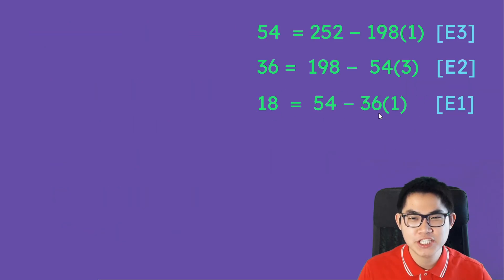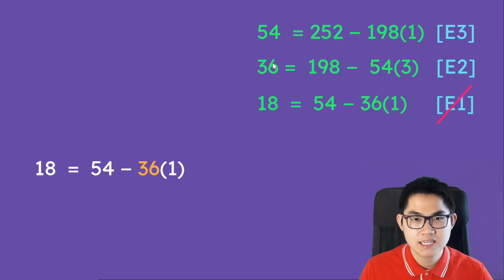Let's take this equation and write it down here. So we just copy it down, and we're going to cross out equation 1, meaning that we used it. Now, we look at equation 2, and we see that we have a 36. And here we also have a 36. So we replace this 36 with 198 minus 54 times 3, and then cross out equation 2.